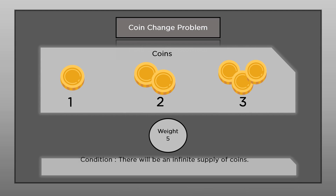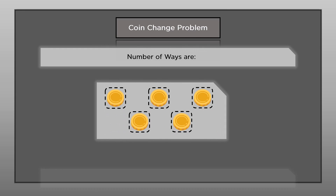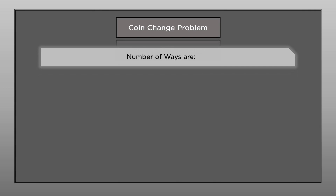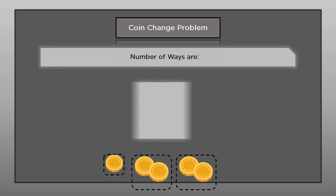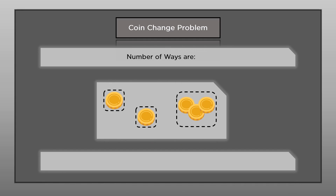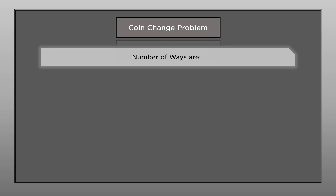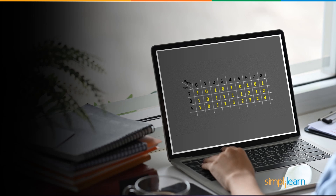The denominations of the coins are 1, 2, and 3, and the target weight is 5. There are five ways to make 5: using five 1-rupee coins; three 1-rupee coins and one 2-rupee coin; two 1-rupee coins and one 3-rupee coin; one 2-rupee coin and one 3-rupee coin. In total, we have five ways to make weight equal to 5 using these coins.